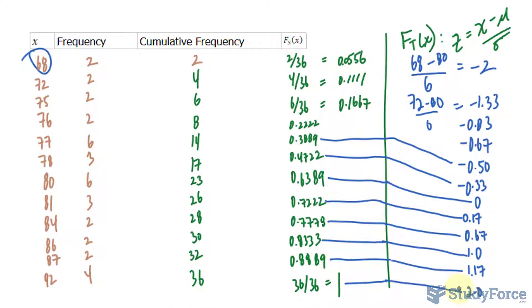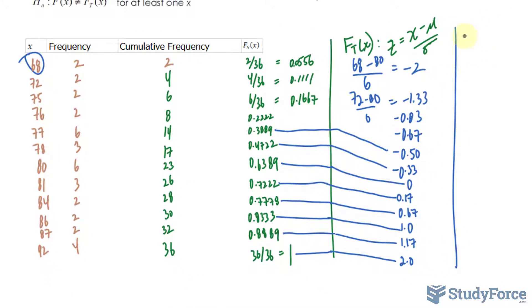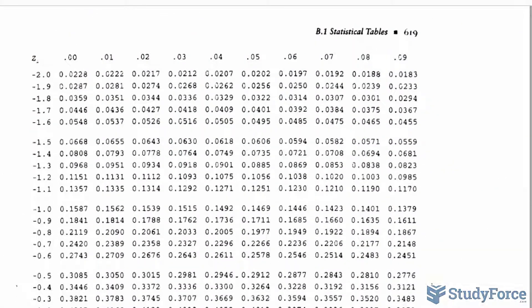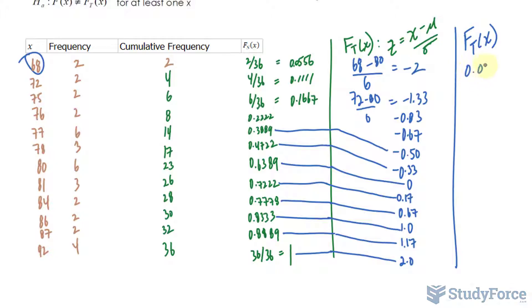Now that you have these values on the screen, we can actually calculate F_t(x). These are found by locating the z-scores in a table and writing down the probability. For example, negative 2 is found right here, and the probability at a z-score of negative 2 equals 0.022. Let me write down the rest for you.